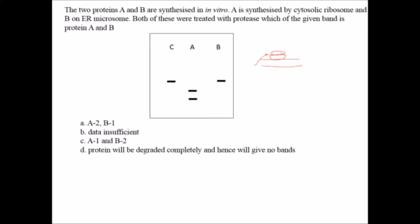When protein B is synthesized over the endoplasmic reticulum, it will be internalized into the ER. When we rupture the cell or damage the ER, it changes into double-layered microsomes. So when protein is synthesized over microsomes with the help of ribosomes, it gets internalized. After internalization, if you treat it with protease enzyme, the protein cannot cross the membrane, so it gets protected. But protein A synthesized in the cytosol is in free condition, so the protease enzyme will break it down.